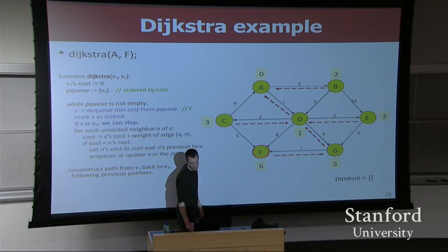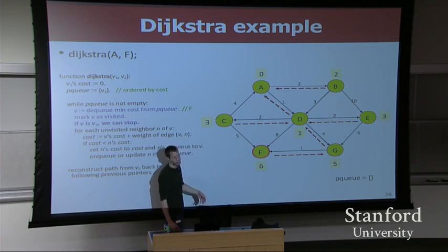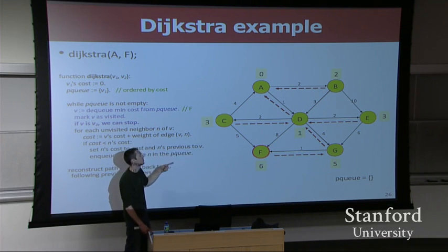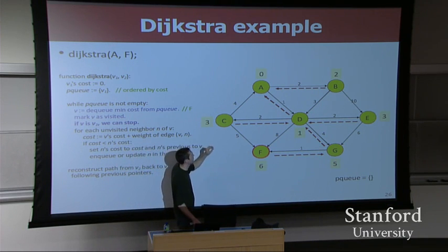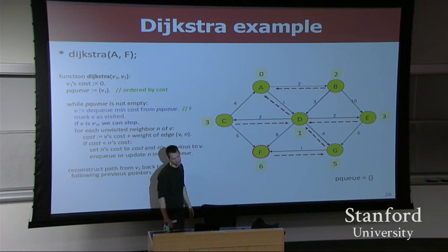We walked through this in detail, where we saw that eventually on this algorithm, on this particular graph example, the algorithm would find a path from A to F. The lowest cost was ADGF. We figured that out because once we visited F, we knew that its cost was six and its previous was G, and we just followed those previous pointers all the way back. That's one specific example.